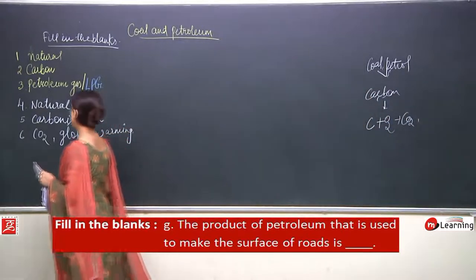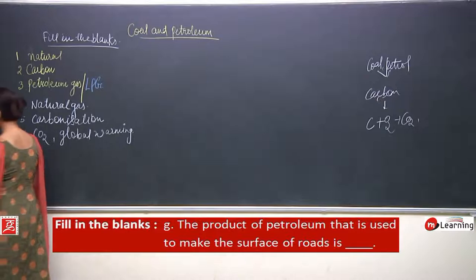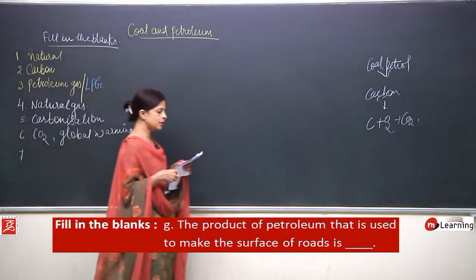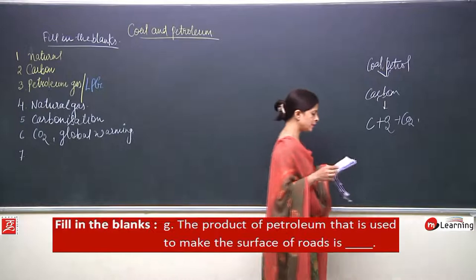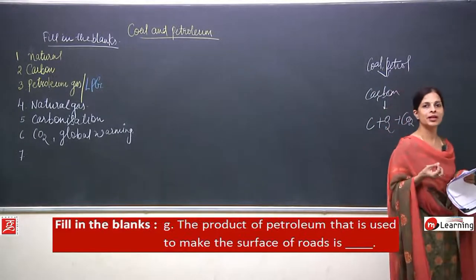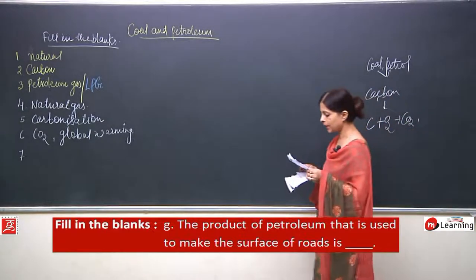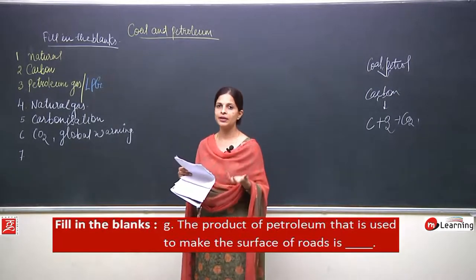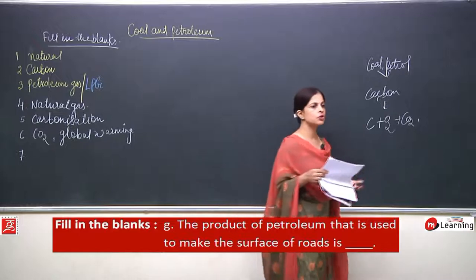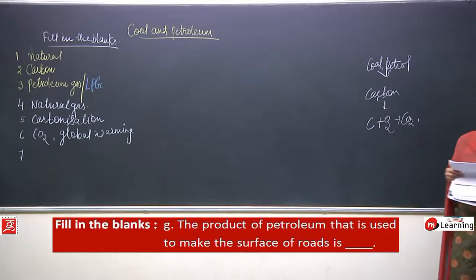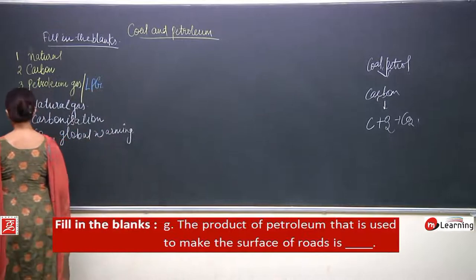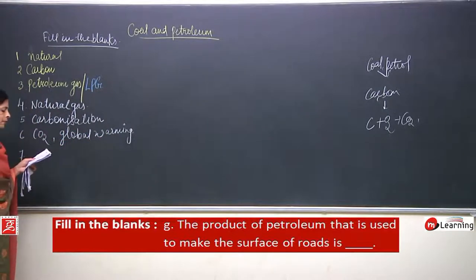The seventh one: the product of petroleum that is used to make the surface of roads is dash. When the fractional distillation of petroleum is done, the product used to make the surface of roads is bitumen.